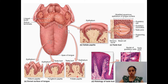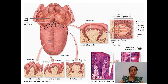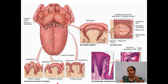The largest papillae are the circumvallate papillae, arranged in a row in front of the sulcus terminalis. They are circular-shaped and have many taste buds on their sides. Fungiform, foliate, and circumvallate papillae all carry taste sensation, while filiform papillae are purely mechanical. The circumvallate papillae have the most numerous taste buds.